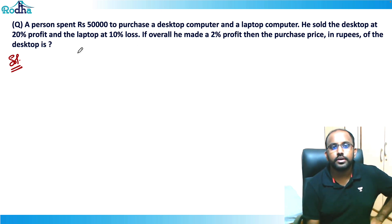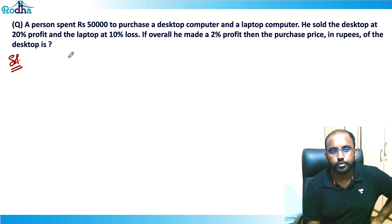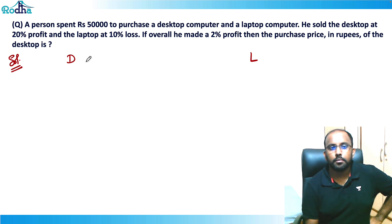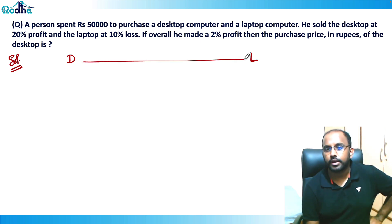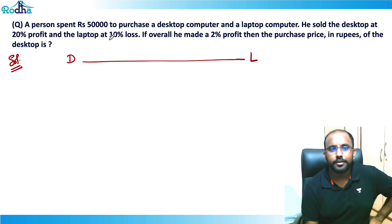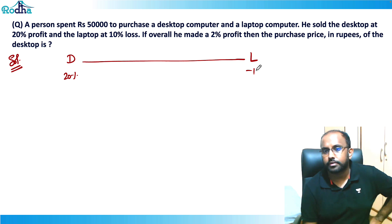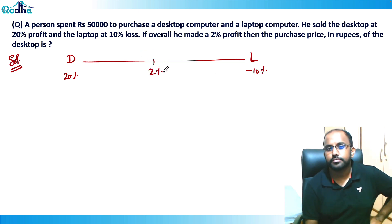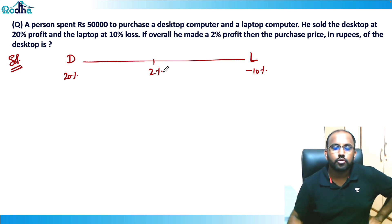So what we need to see here — let's put the price on one side for desktop and on the other side for laptop. What I can apply here is allegation. Why allegation? Because in desktop he's making 20% profit, in laptop he's making 10% loss, and overall he's making 2% profit.